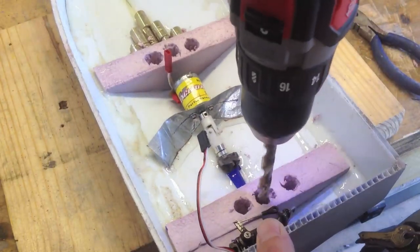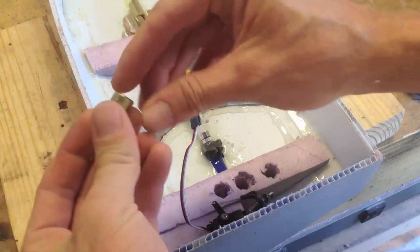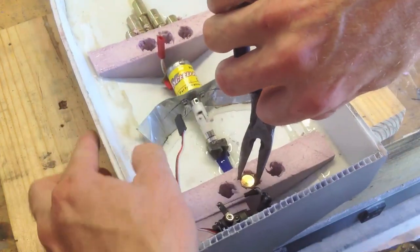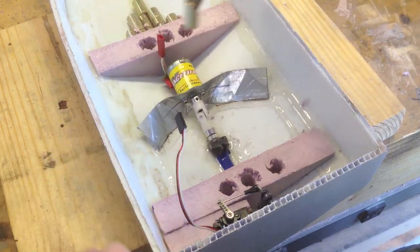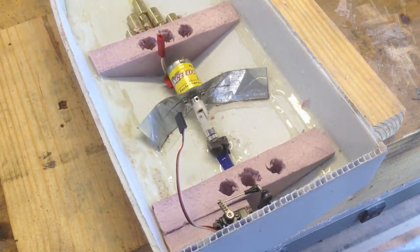Drill these holes in the foam here very carefully. And now I'm going to put these weights in there like so. I'm going to mix a little bit more epoxy. Just put a little bit in there so that these things will stay put even when I turn the boat around.